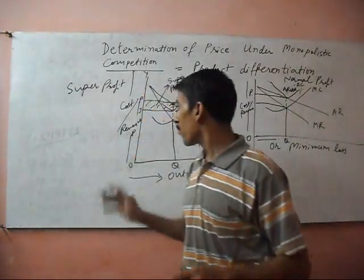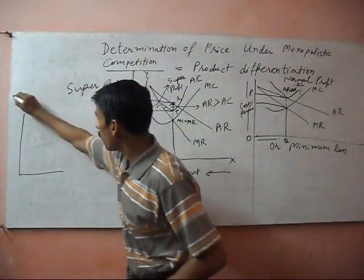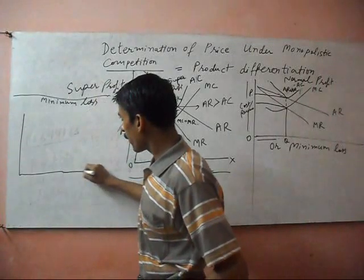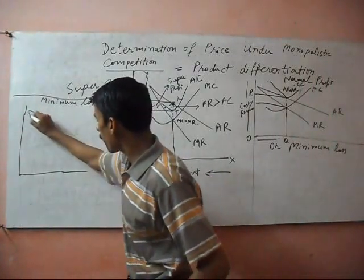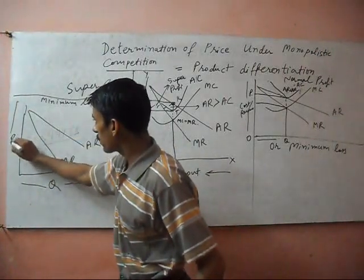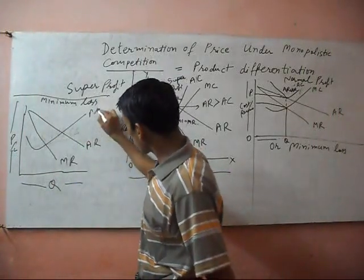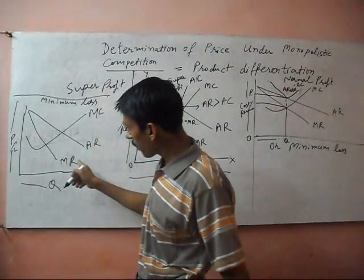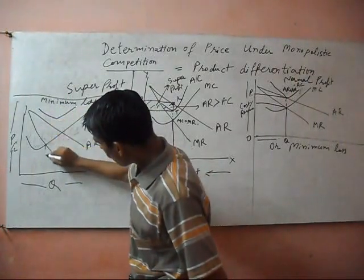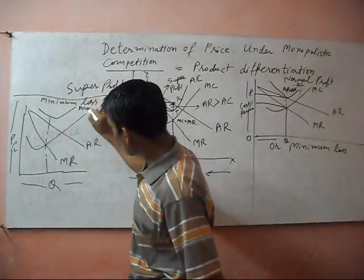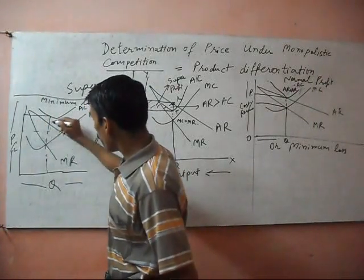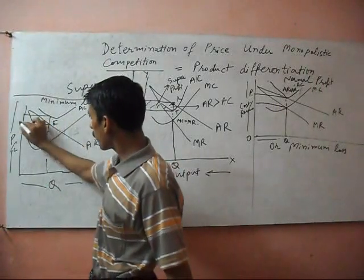Company may also get minimum loss. If it fixes the price - average revenue, marginal revenue. This is output. This is price and cost. Marginal cost cuts the marginal revenue curve from below. And average cost is more than average revenue. This is the price.